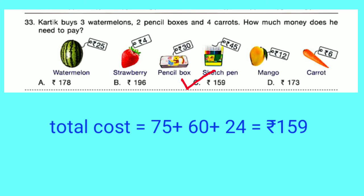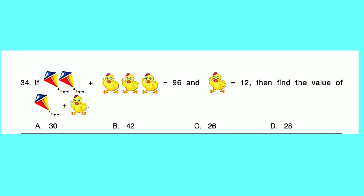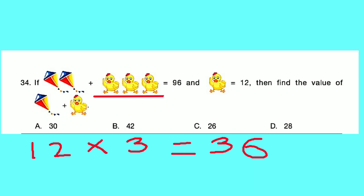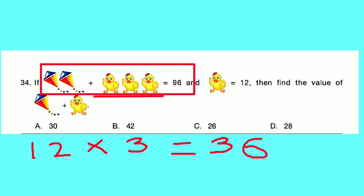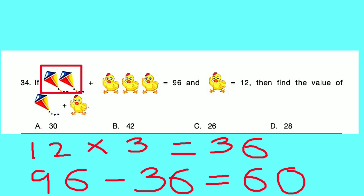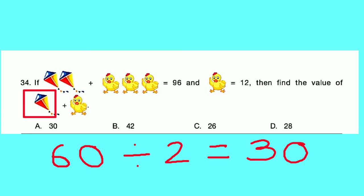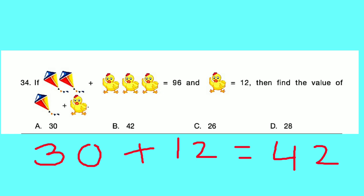Question number 34: If 2 kites plus 3 chicks equals 96 and 1 chick equals 12, find the value of a kite plus a chick. 3 chicks equal 36. 2 kites equal 96 minus 36 equals 60. So 1 kite equals 60 divided by 2 equals 30. 1 kite plus 1 chick equals 30 plus 12 equals 42. Option B is correct.